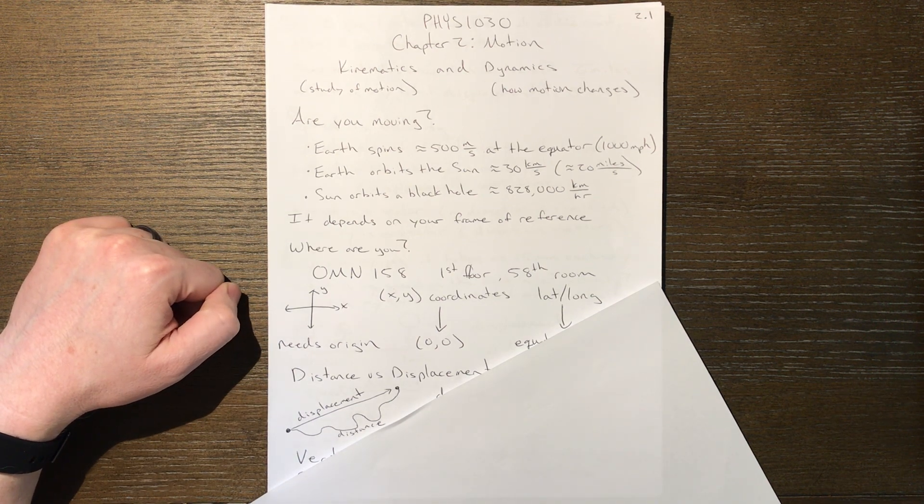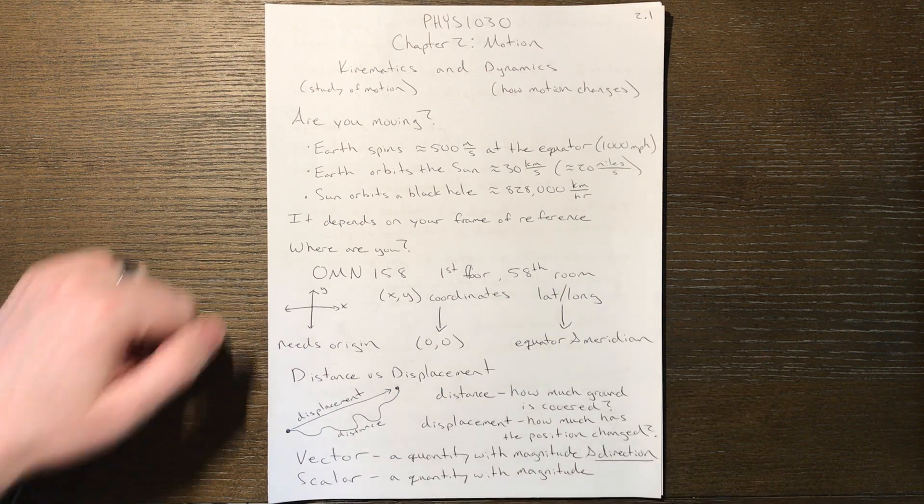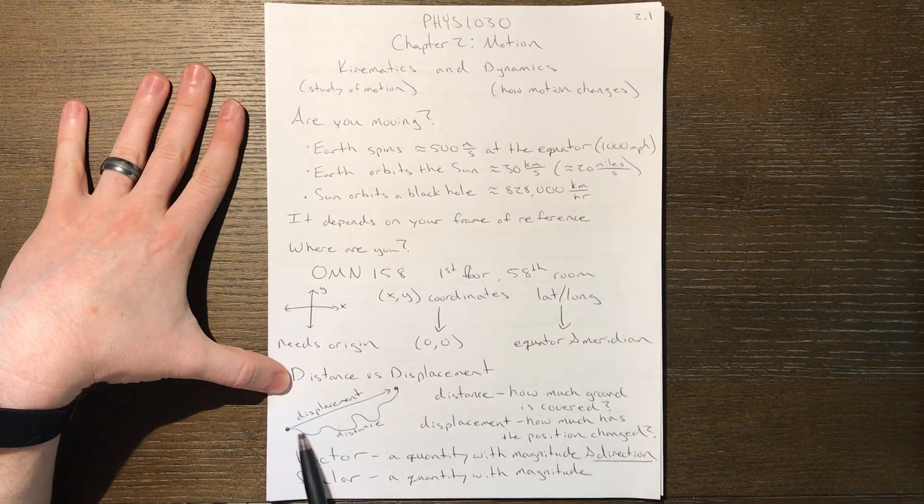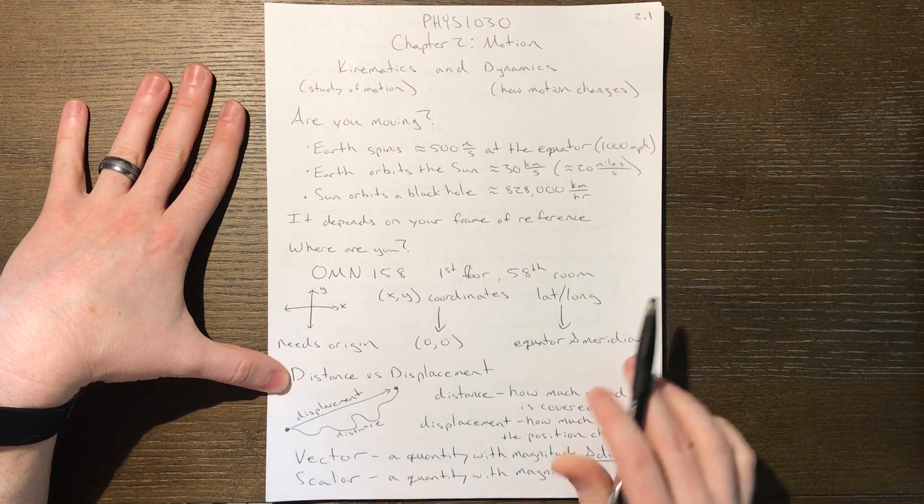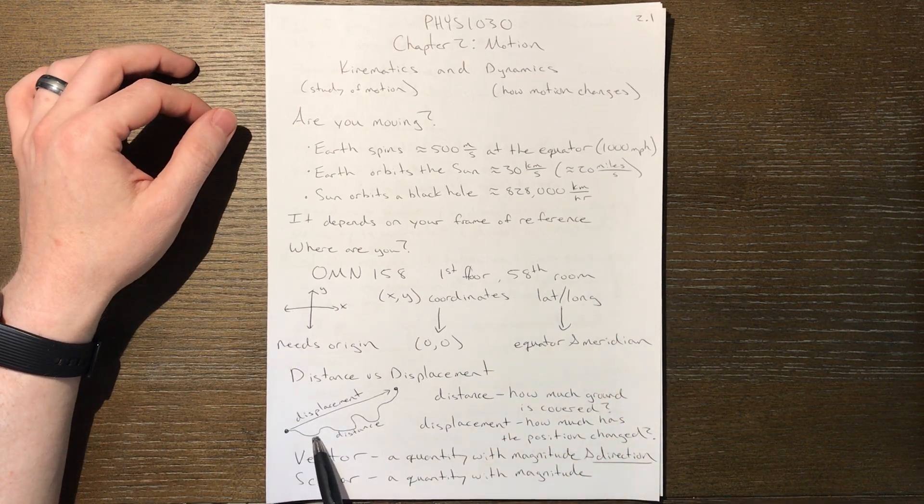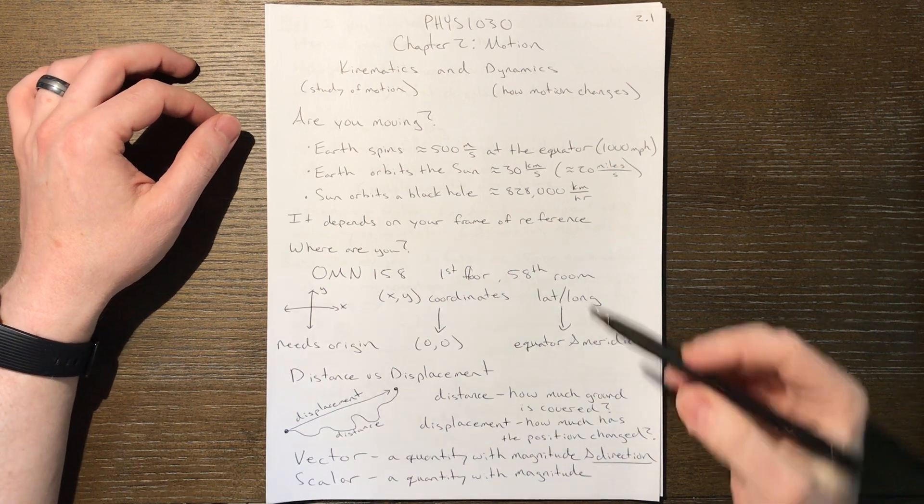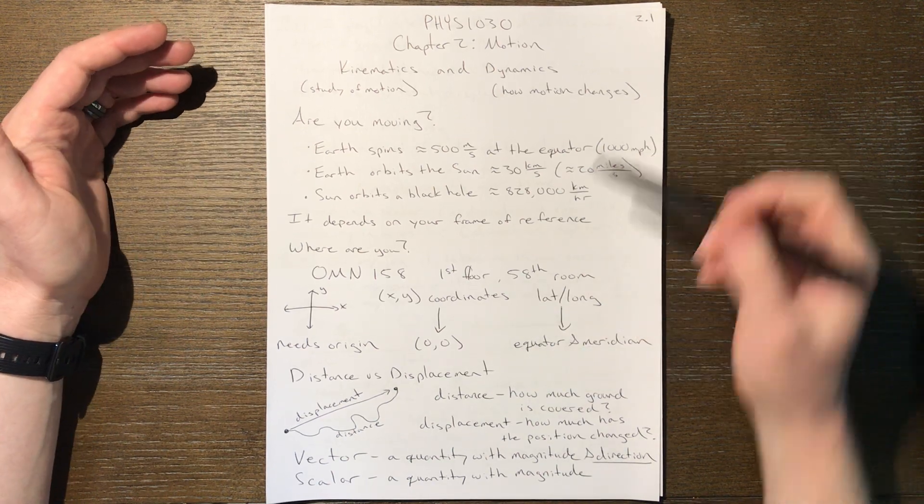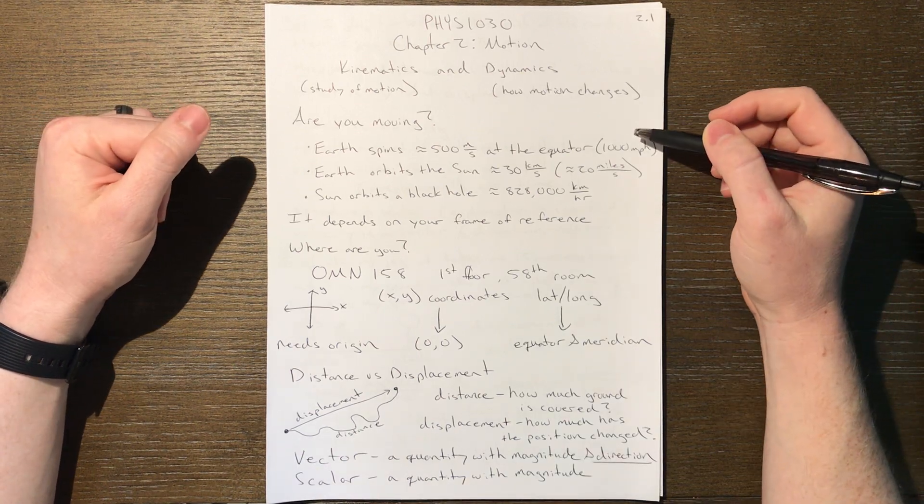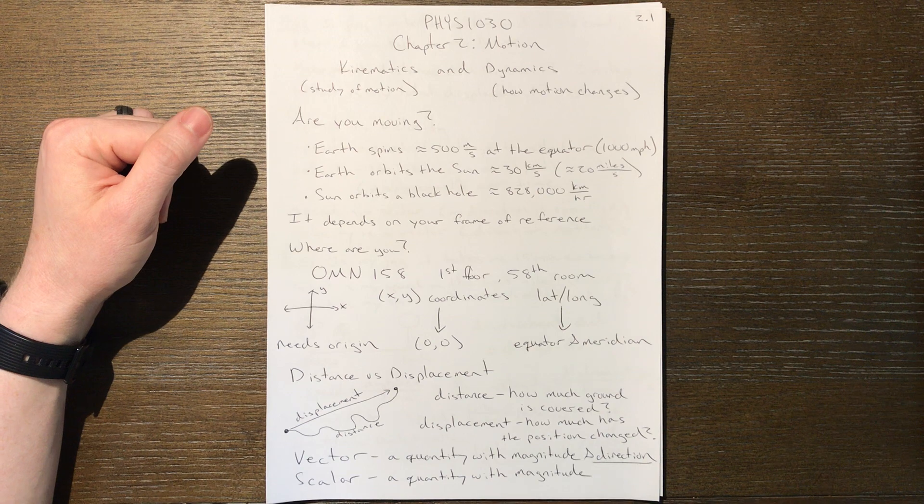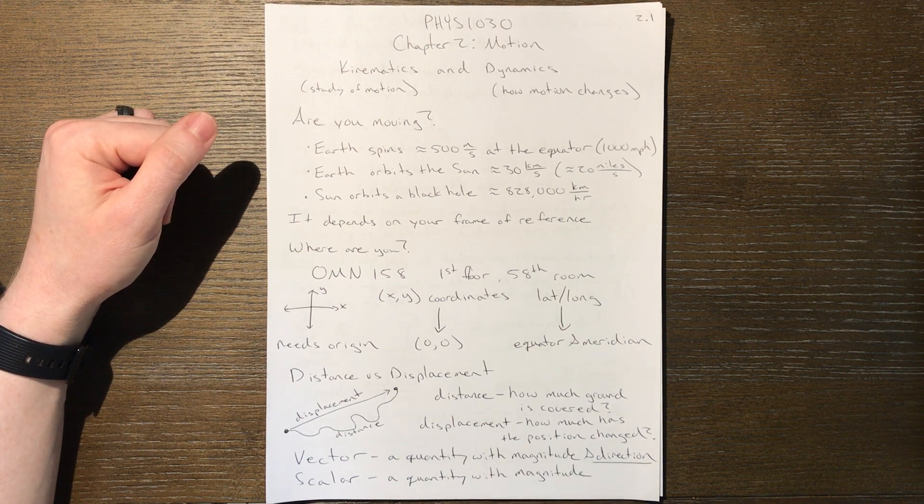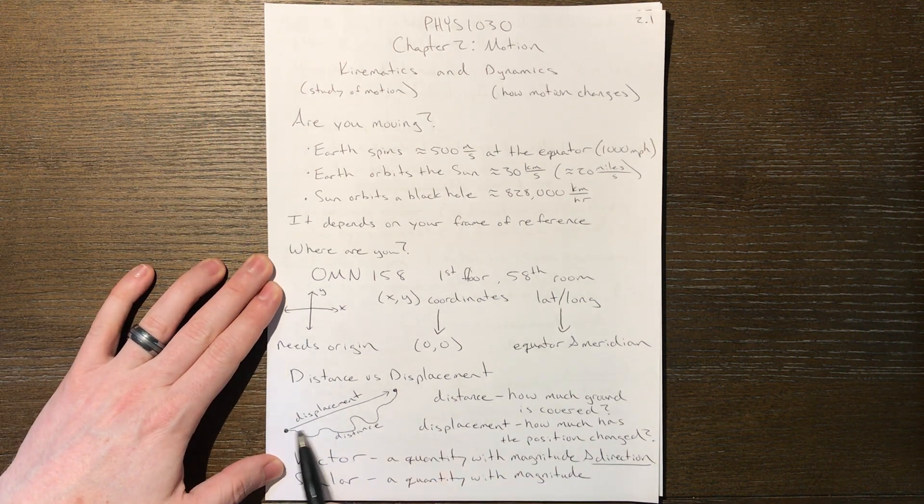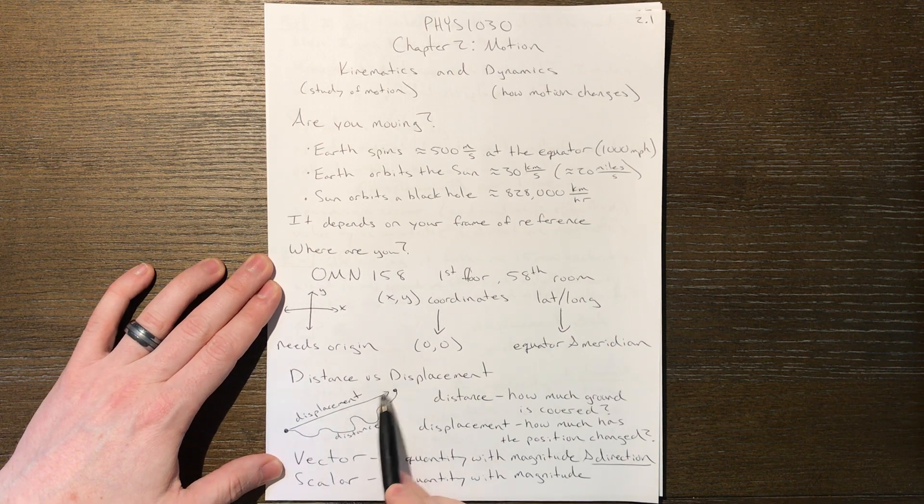Now the difference between distance and displacement is really how we get there. Distance is defined as the actual amount of ground covered. So if you were able to drop a string and slowly let it unwind with all its wiggles and curves, how much ground is covered answers the question of distance - how far you actually walked to get from point A to point B. Displacement is how much the position has changed. Or if you're asked the question of how much has the position changed, the answer is displacement. Displacement is a straight line, an arrow in fact, pointing from where you start to where you end. That tells you how your position has changed.